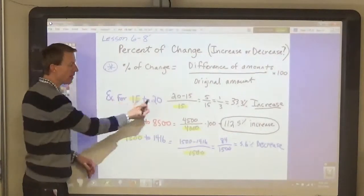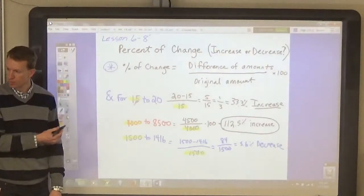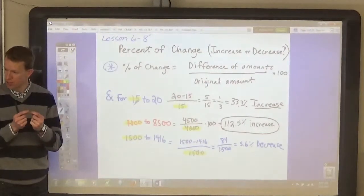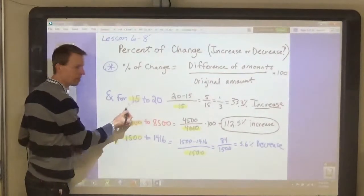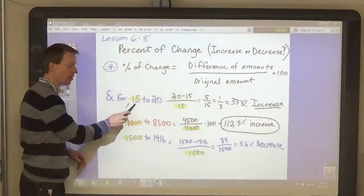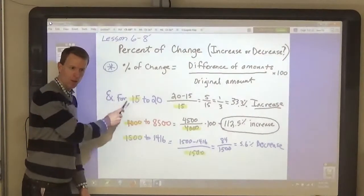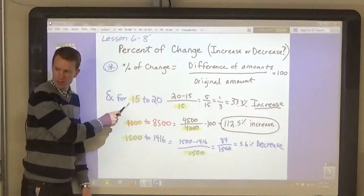You always find the difference, the difference between the two amounts, and then divide it by the original amount, the amount that you started with—whatever amount was listed first.